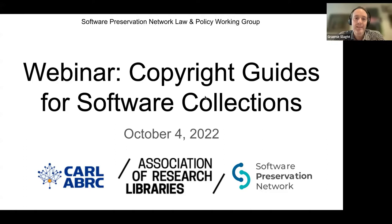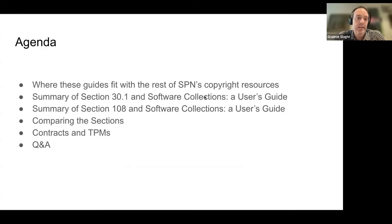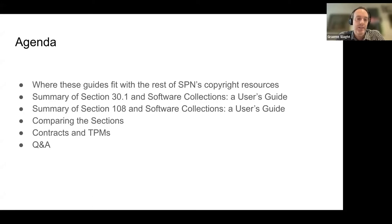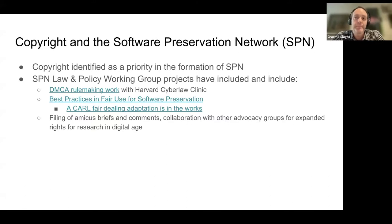Today we're discussing two new resources that SPN has produced. Our agenda covers where these new guides fit within SPN's copyright resources and advocacy, then a summary of the Section 30.1 and software users guide, followed by a summary of the Section 108 users guide. We'll briefly compare the affordances and limitations of each section, discuss externalities like contracts and TPMs, and hopefully have time for Q&A.